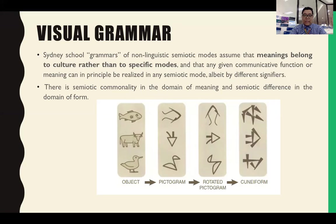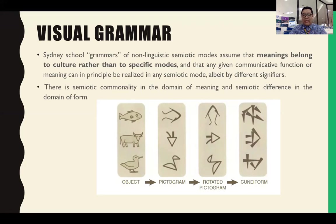There is semiotic commonality in the domain of meaning and semiotic difference in the domain of forms. For example, if you look at certain images, we can see objects from which pictograms were actually referenced. The way these pictograms are drawn were primarily based on the objects present or signified in the community or society. We also have rotated pictograms and cuneiform. We can see that there are commonalities with the images used and the signifiers also used in creating these symbols or letters.